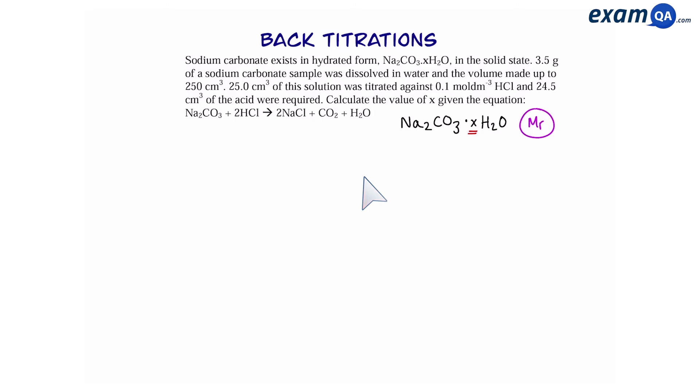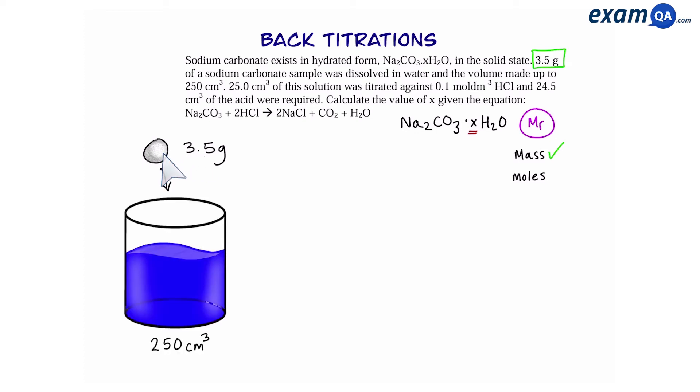Okay, so in this question, to work out MR, we need to know mass and moles. We've already been given the mass. However, we haven't been given the moles. 3.5 grams of hydrated sodium carbonate is placed into a beaker and made up to 250 centimetres cubed with water. A 25 centimetre cubed sample is taken from this original beaker. This is then titrated with hydrochloric acid, requiring 24.5 centimetres cubed of a 0.1 molar solution.